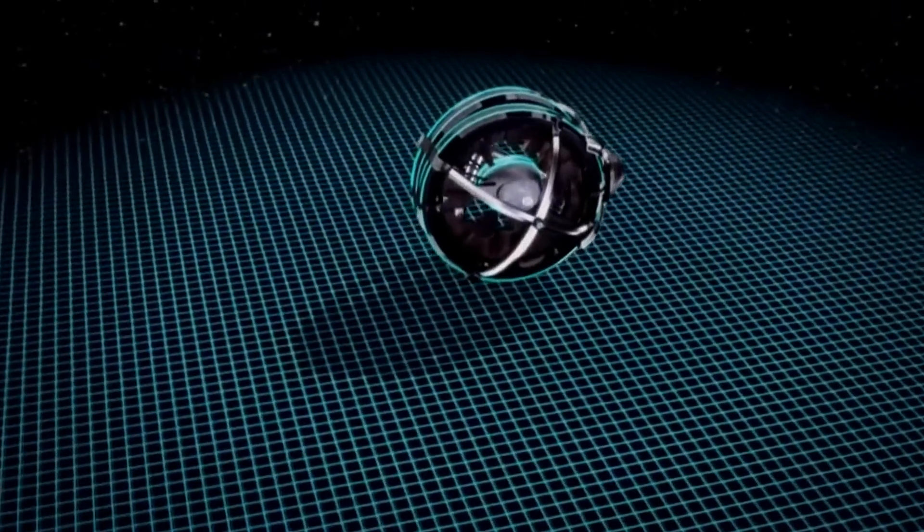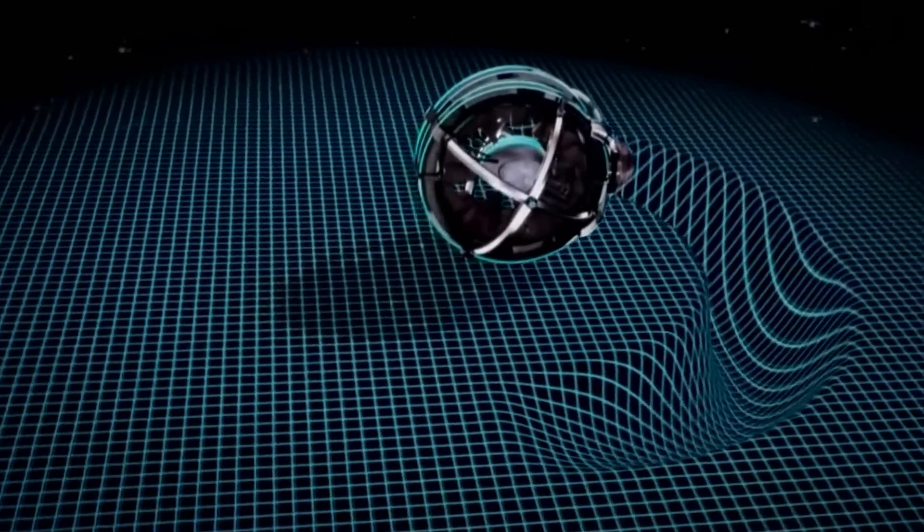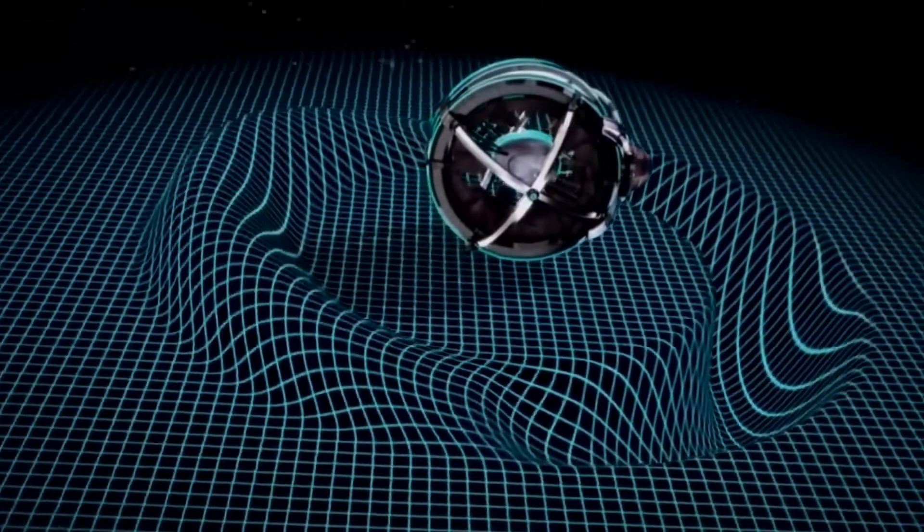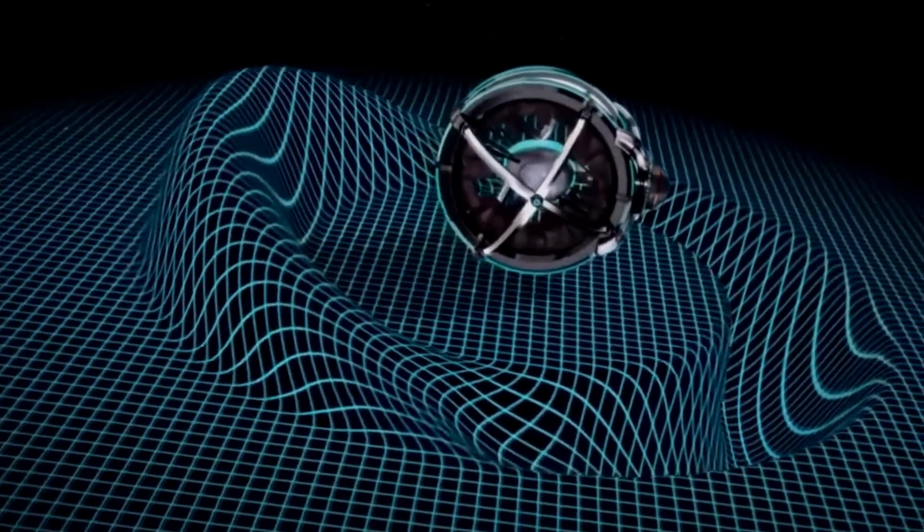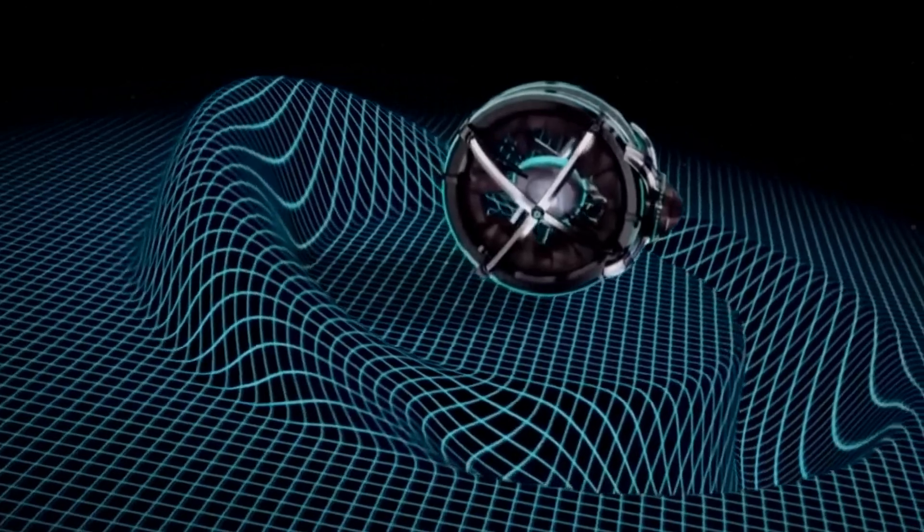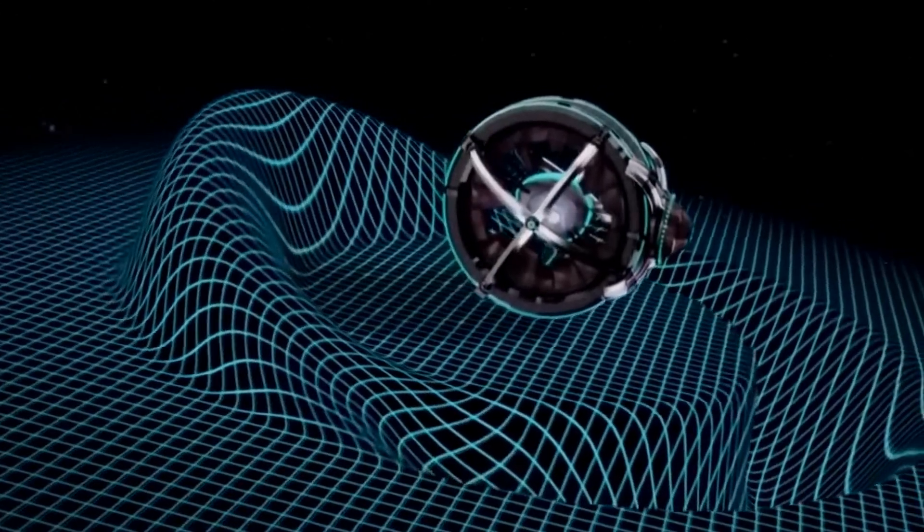In effect, one would create what is called a warp bubble, the name taken straight out of science fiction. And that would involve compressing a region of space-time in front of a spacecraft and expanding a region of space-time behind a spacecraft, while the spacecraft itself sat stationary inside this flat bubble. One would effectively be riding a wave of space-time.